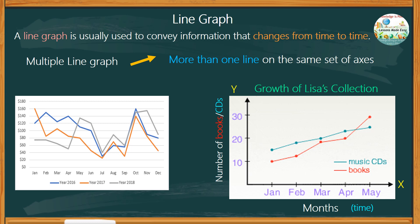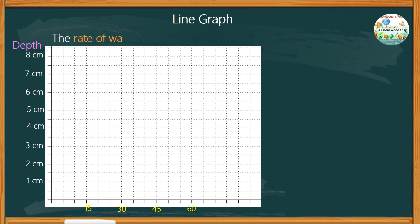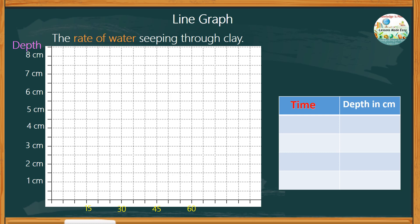Let's create a simple line graph regarding the rates of water seeping through clay. Use this information. Time is measured in seconds, and the depth is measured in centimeters. Within 15 seconds, the water seeps through with a depth of 3.5 centimeters. At 30 seconds, the depth is 6 centimeters. At 45 seconds, the depth is 7.5 centimeters, and at 60 seconds, the water flows through a depth of 8 centimeters.